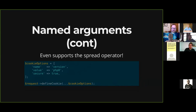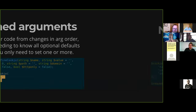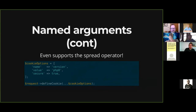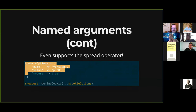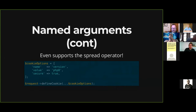One cool part about named arguments is that they also support the spread operator. I can define an associative array — perhaps grabbed from configuration — and pass that directly to the function call through the spread operator. Because it's named arguments, it will know exactly how to handle this, which is really cool.